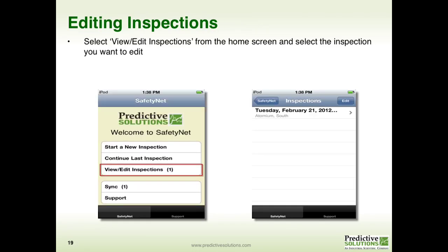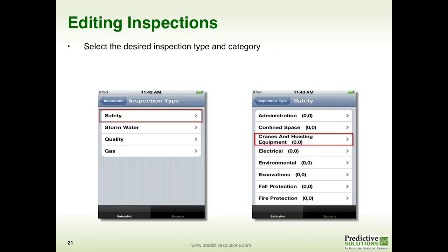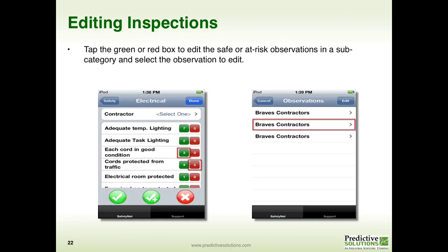Now let's talk about editing an inspection. While an inspection is still on your device, you have the ability to edit it. From your home screen, select View/Edit Inspection. You will be presented with a list of unsynchronized inspections on your device. Select the inspection from the list, and you will be presented with the overall detail screen for that inspection. Make whatever changes are necessary and select Done. You will then need to select the inspection type and subsequently the category you would like to edit. Once you select your category, it will list the subcategories. Next to each subcategory, the green boxes show the total number of safe items collected, and the red boxes show the total number of at-risk items collected.